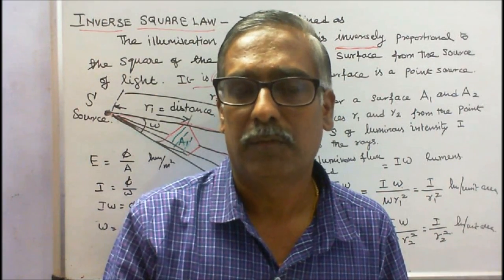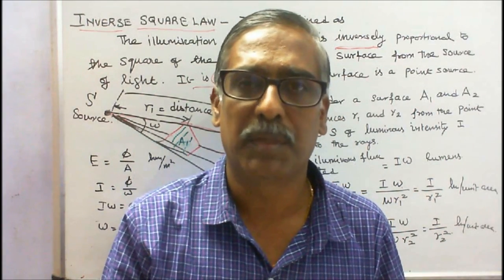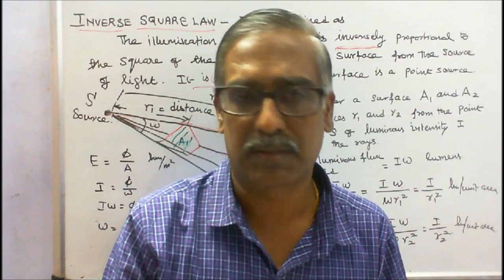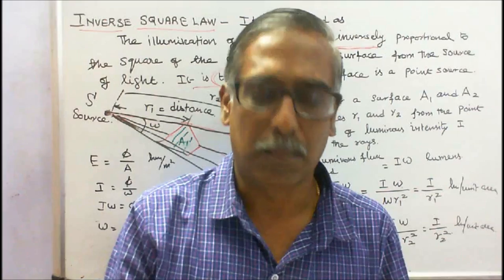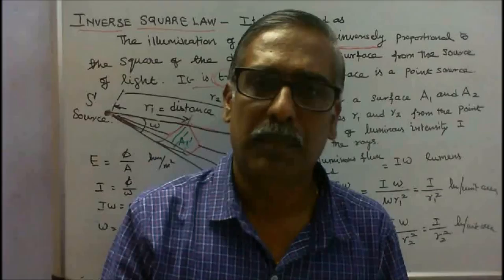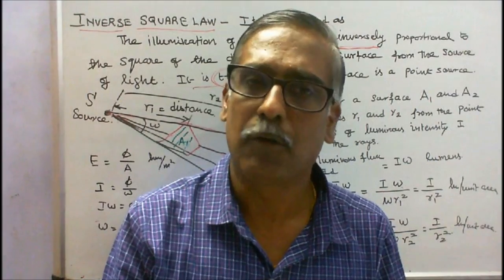Today's topic is loss of illumination and today's information about the great scientist Lambert. His full name is Johan Henrich Lambert, mathematician, physicist, astronomer and philosopher.